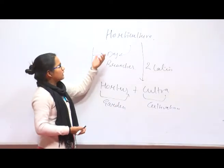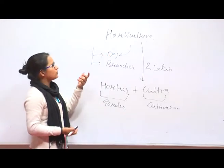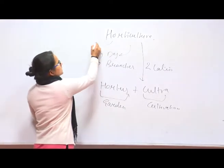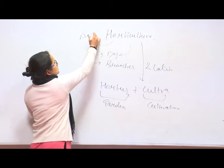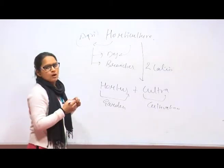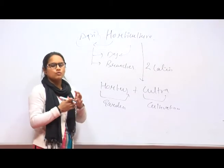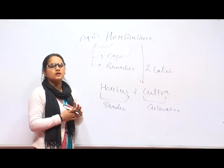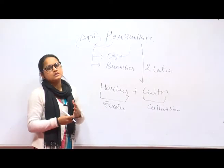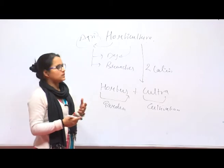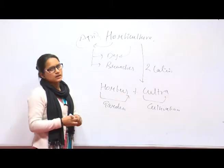Now coming to the definition portion. What is the definition of Horticulture? Horticulture is basically a branch of agriculture in which we deal about and study about the fruits, vegetables, flowers, aromatic plants, medicinal plants, and plantation crops. All these things come under the Horticulture portion.